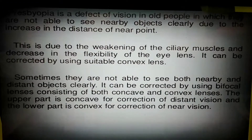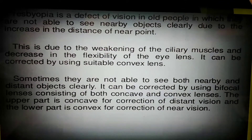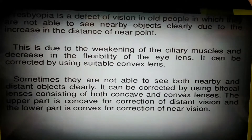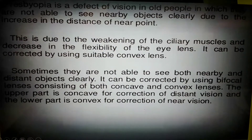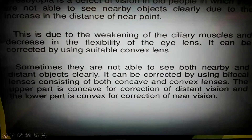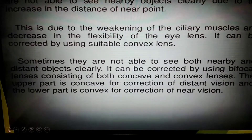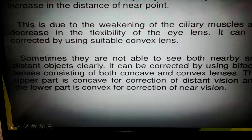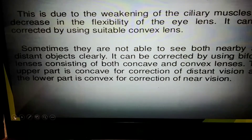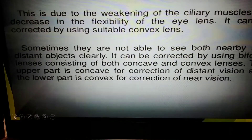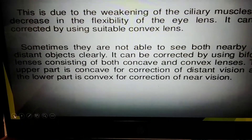Next, presbyopia. It is a defect of vision in old people in which they are not able to see nearby objects clearly due to an increase in the distance of the near point. This is due to the weakening of the ciliary muscles and a decrease in the flexibility of the eye lens. It can be corrected by using a suitable convex lens. Sometimes they are not able to see both nearby and distant objects clearly, and it can be corrected by using bifocal lenses consisting of both concave and convex lenses — the upper part is concave for correction of distant vision and the lower part is convex for correction of near vision.